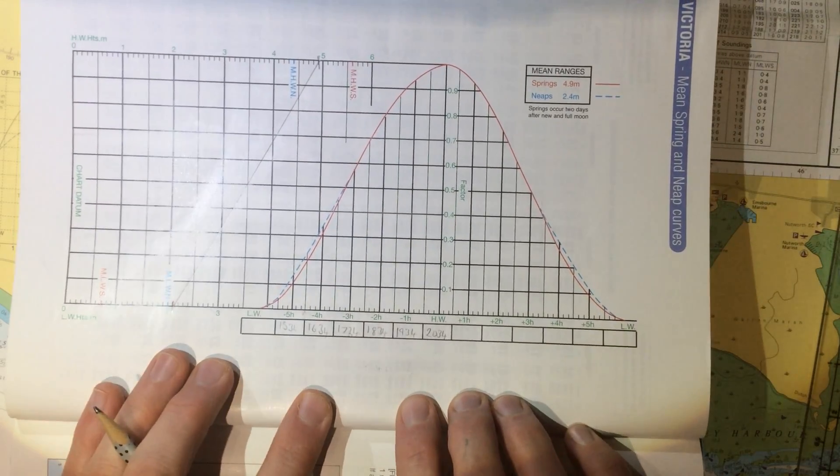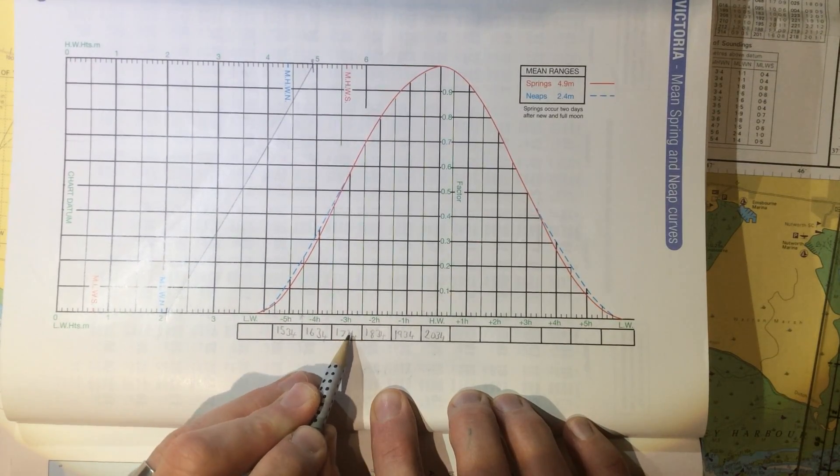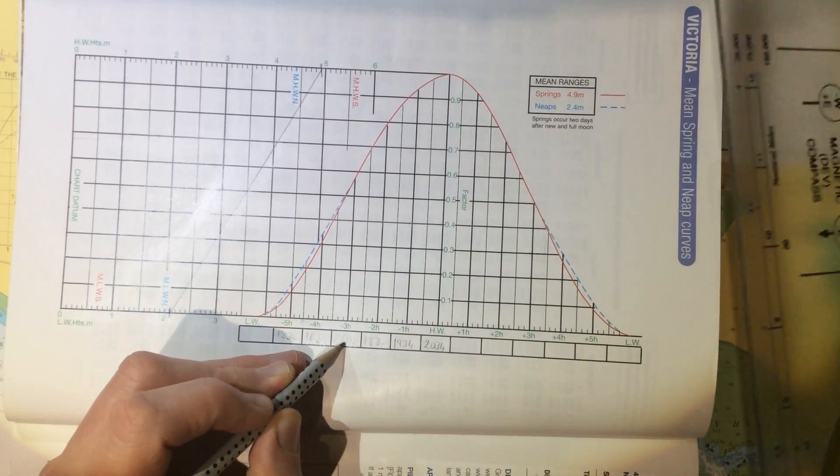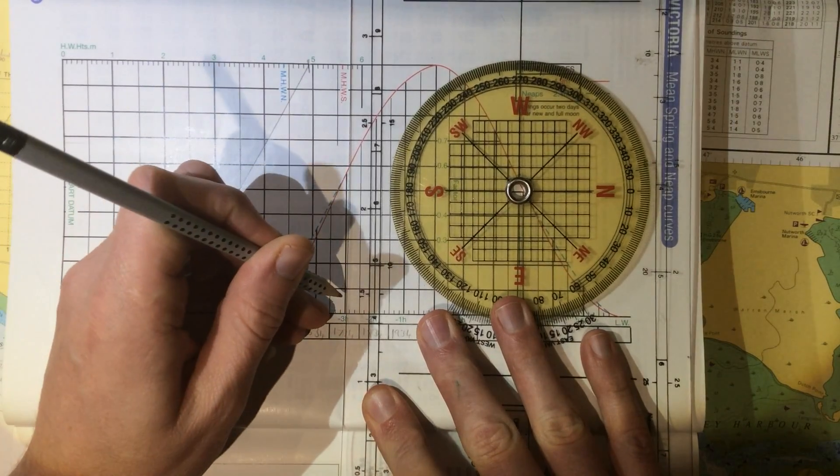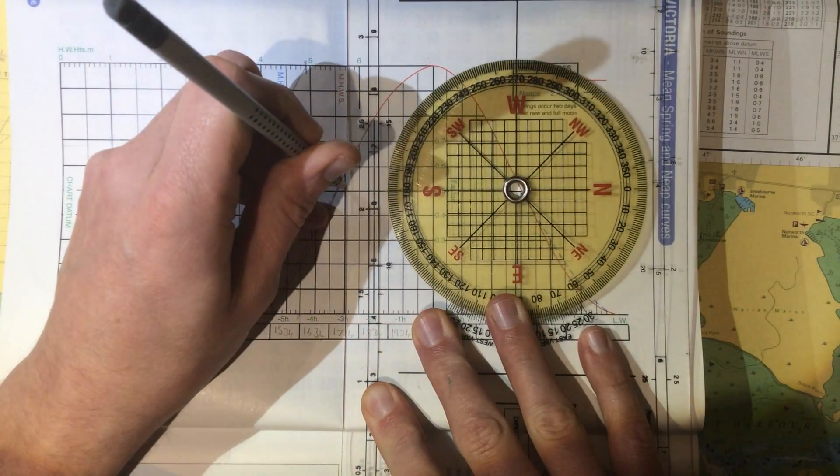Now if we want to know the height of the tide at say 17:34, that's three hours before high water, we then find that on the base here, we go up until we get to the line.